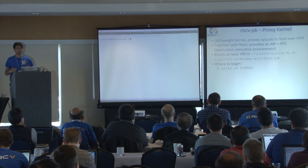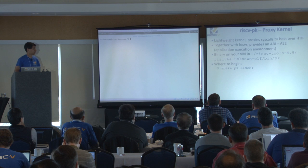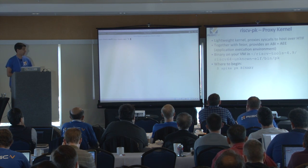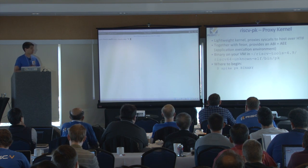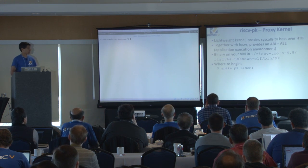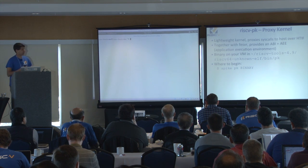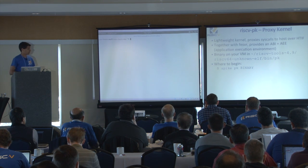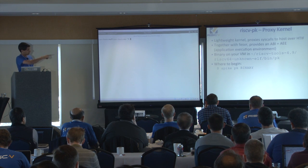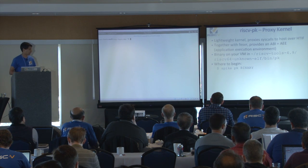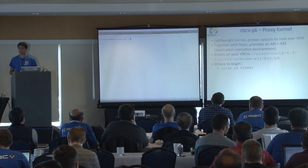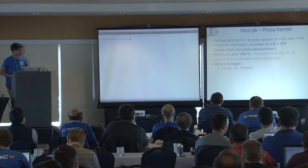The proxy kernel is a lightweight kernel. It's designed so that any syscalls it can't handle directly, it sends out to a host operating system for handling — things like opening a file. This works with FESVR to provide an application binary interface and application execution environment. You can find the RISC-V ELF binary on your virtual machine. The way to use it is essentially: type spike pk and then the binary. The first argument to pk is the name of the binary you want to execute. We'll actually do that in the VM in a couple minutes.